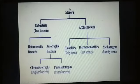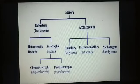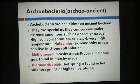The Monera kingdom is divided into two categories: Eubacteria (true bacteria) and Archaebacteria, which are very primitive bacteria that can survive in very harsh conditions.